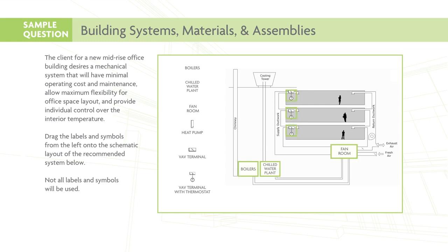Here is the correct response. The single duct variable air volume (VAV) system, as described in the Architect's Studio Companion, meets all of the client's requirements. The fan room is the central hub for the system, conditioning the fresh air before distributing it through the building. Cooling is provided by the chilled water plant, which requires a cooling tower. Heating is provided by boilers, which exhaust through the chimney. Each conditioned space requires a VAV terminal with a thermostat, providing both flexibility and temperature control within individual spaces.